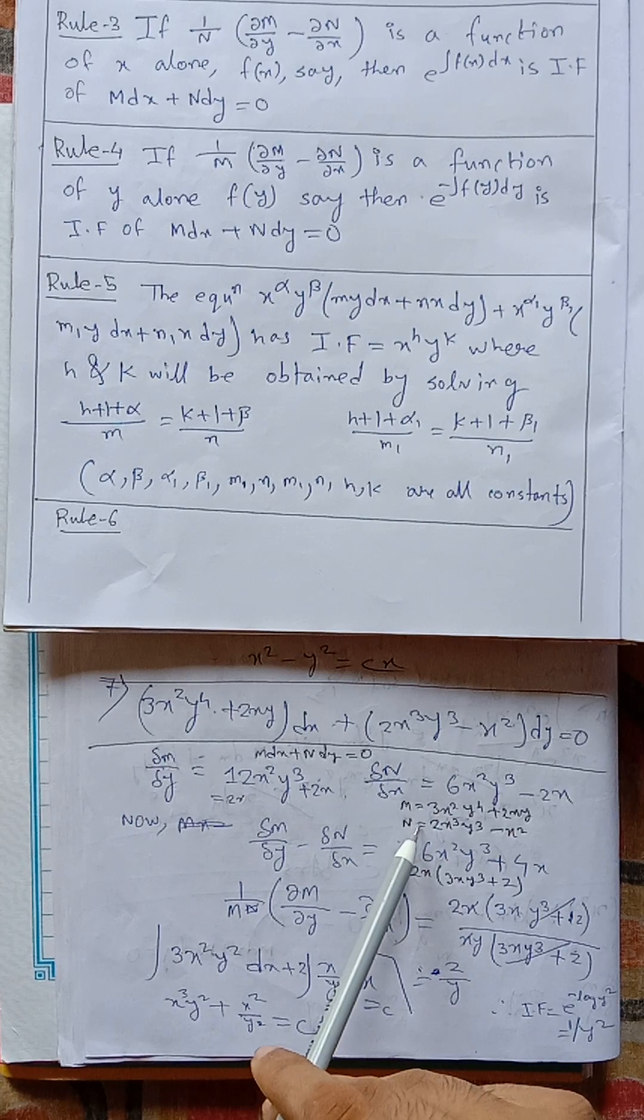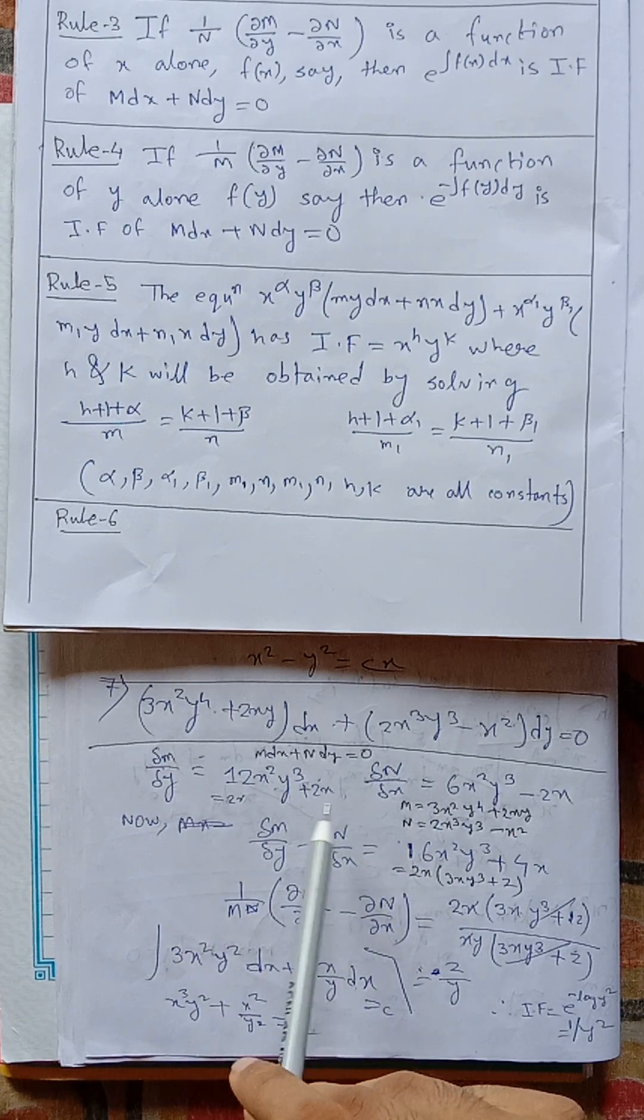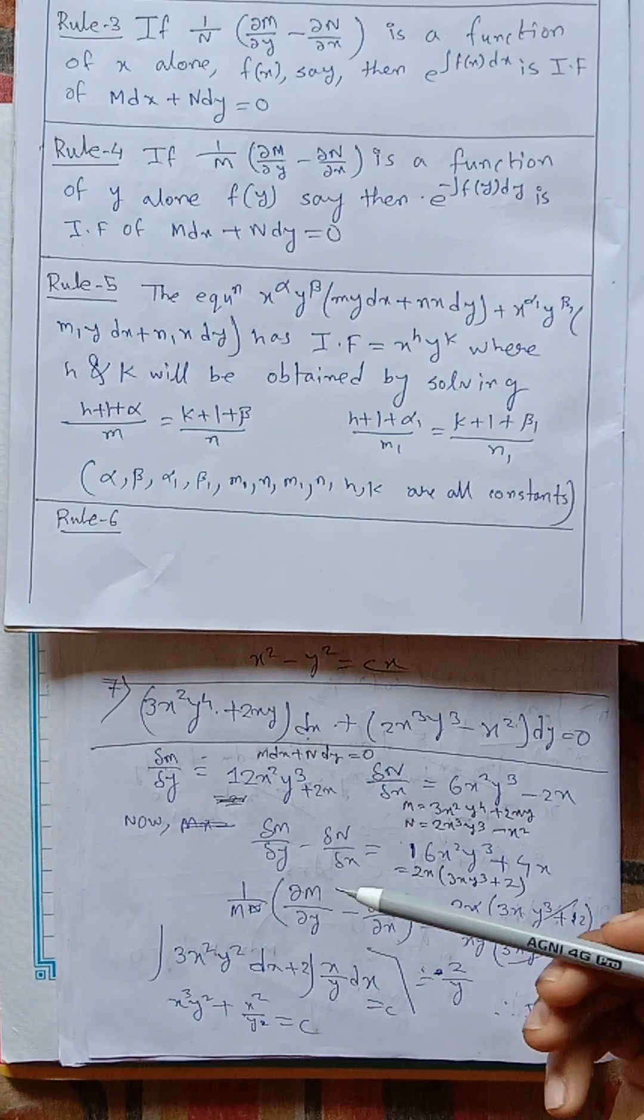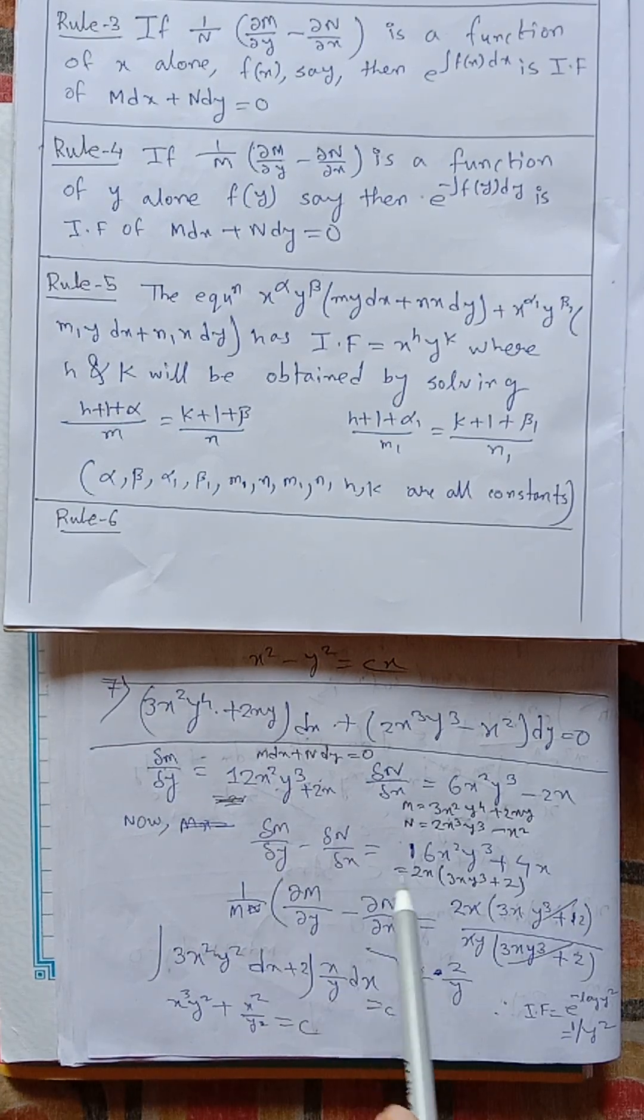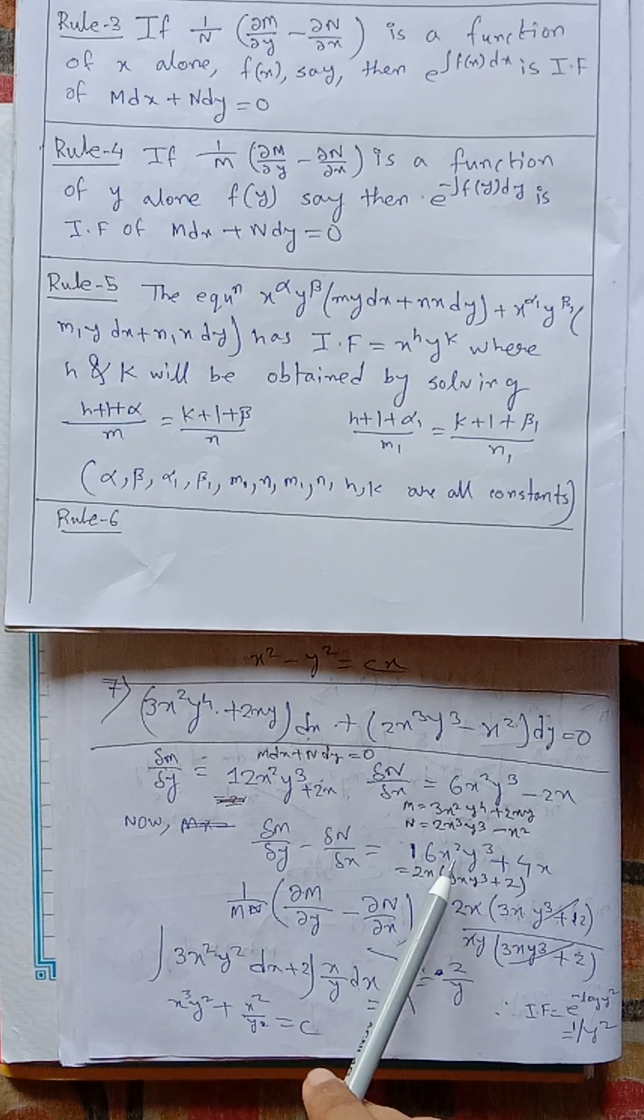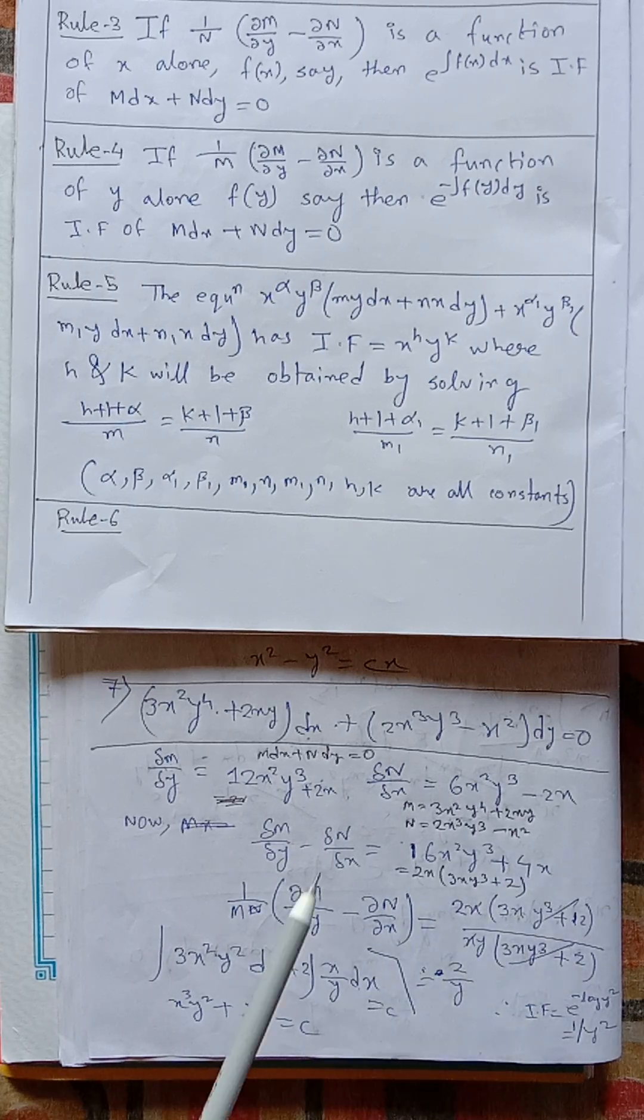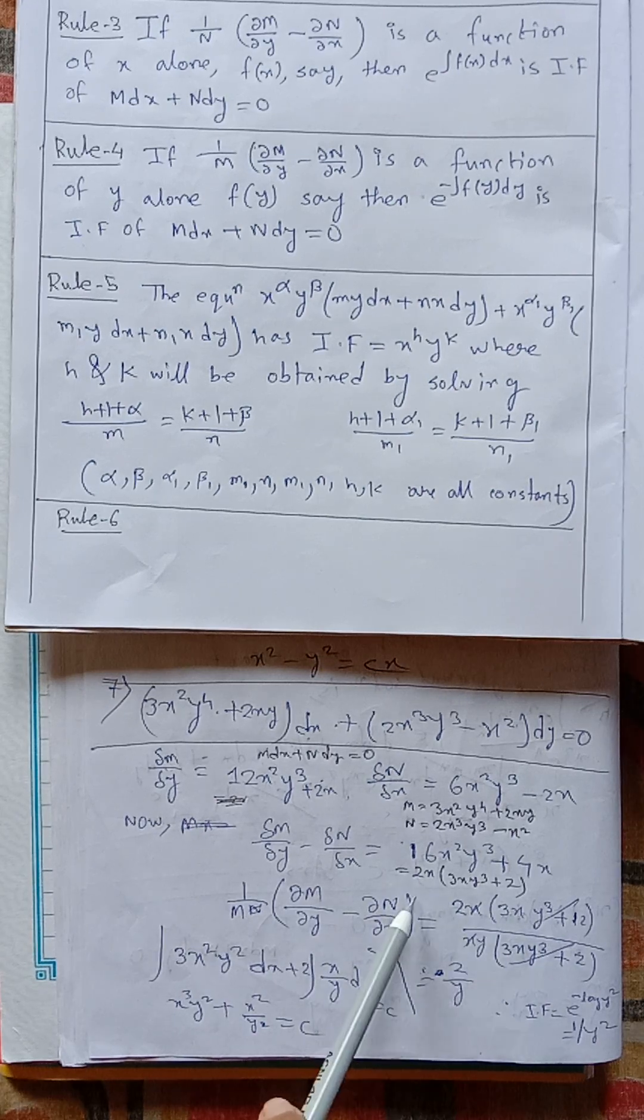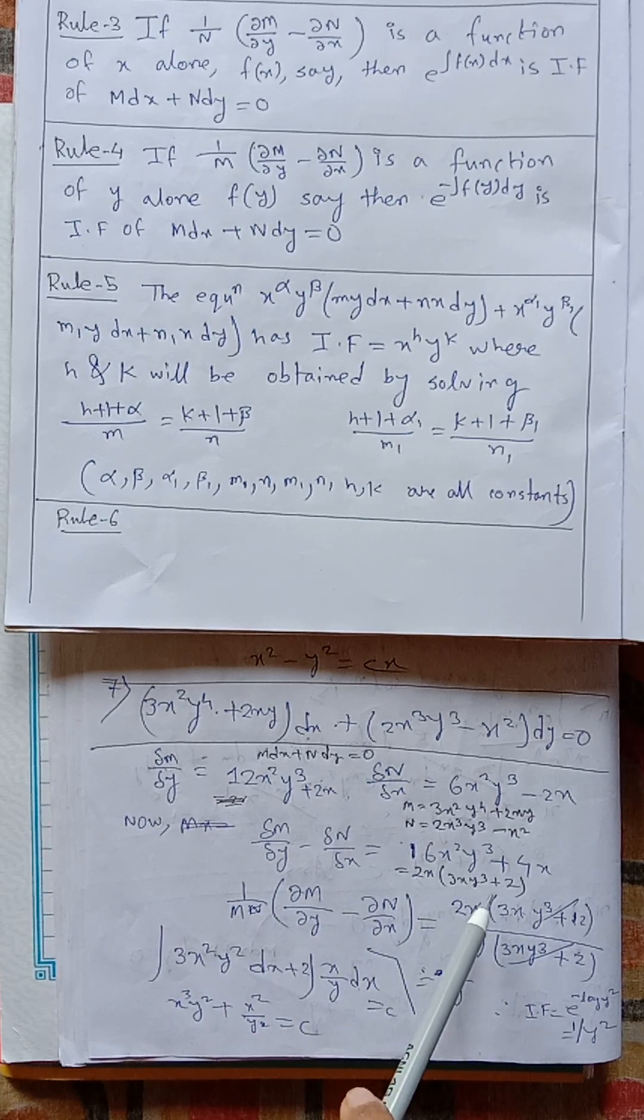Partial differentiation del m del y and del n del x. We can solve this. Del m del y minus del n del x equals to 6x square y cube plus 4x. And after taking common 2x, we get 2x into 3xy cube plus 2.